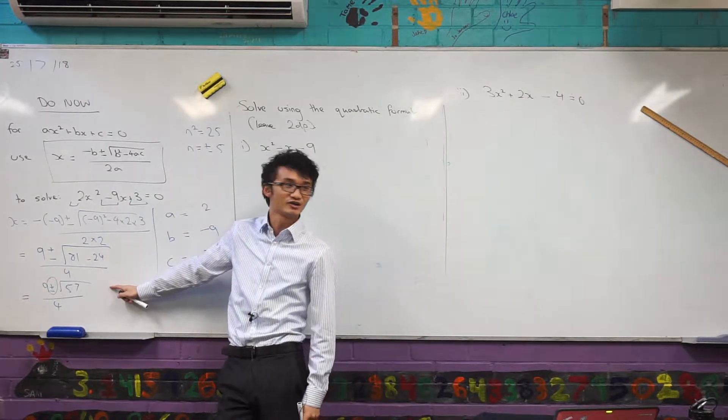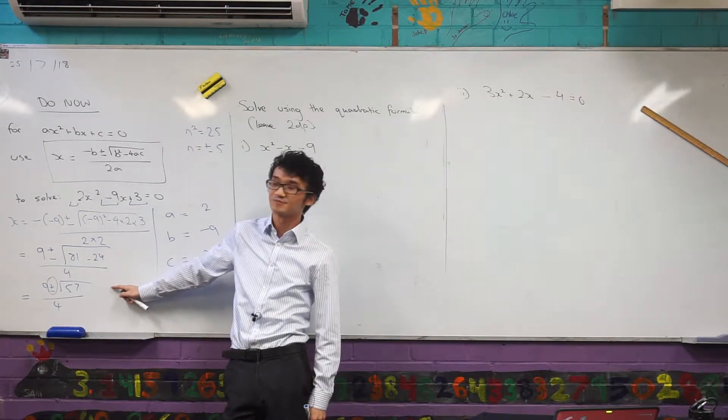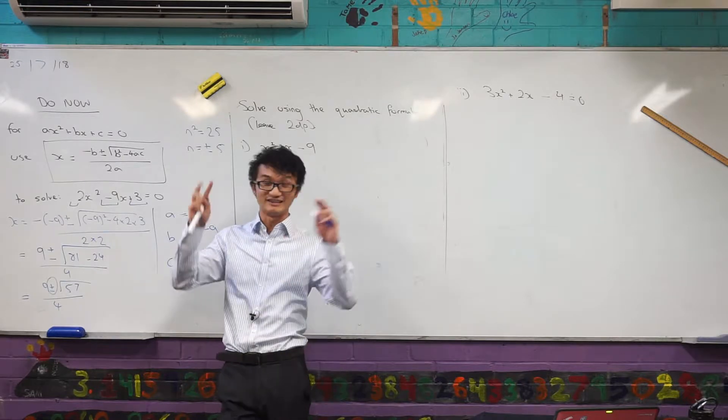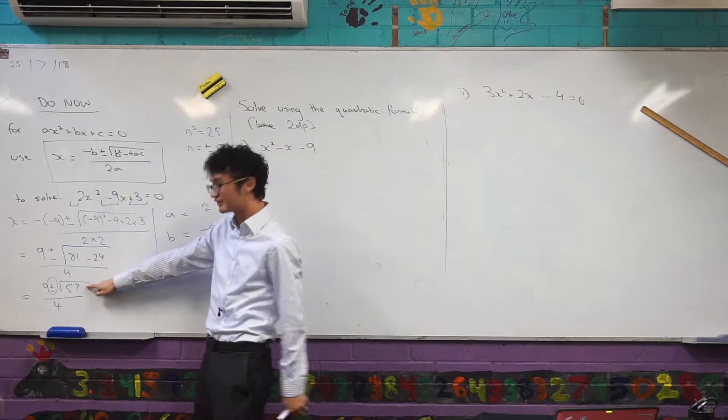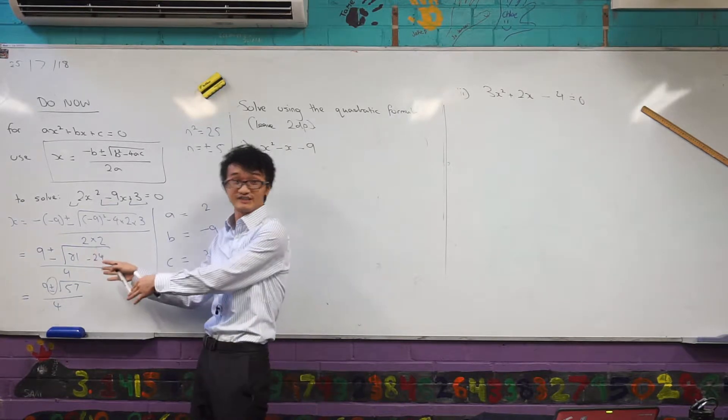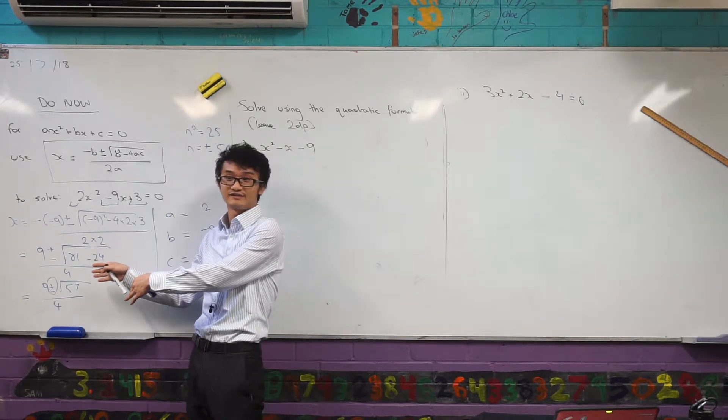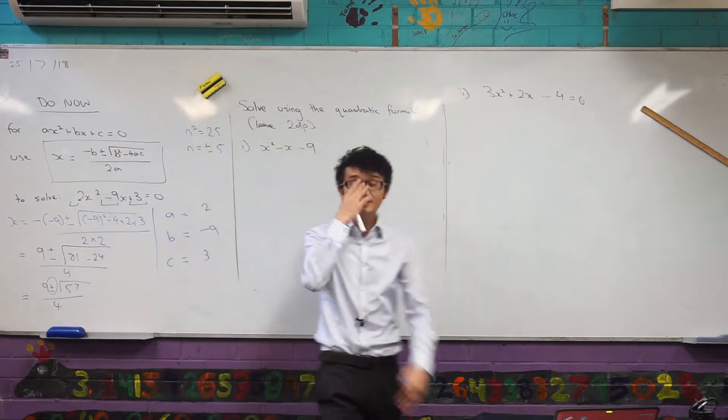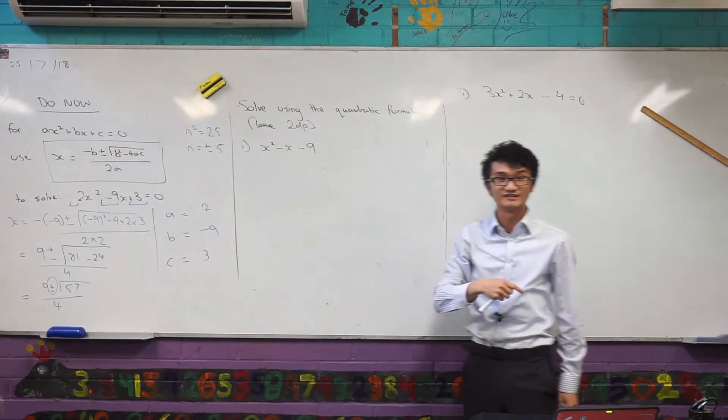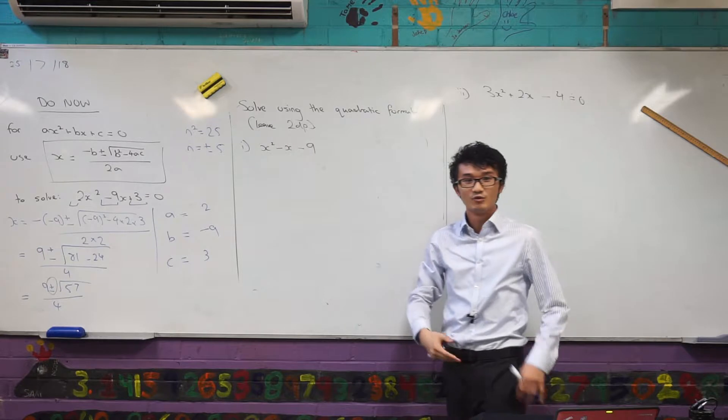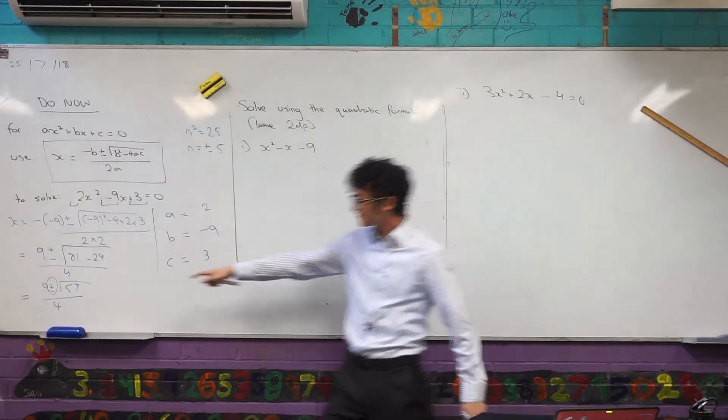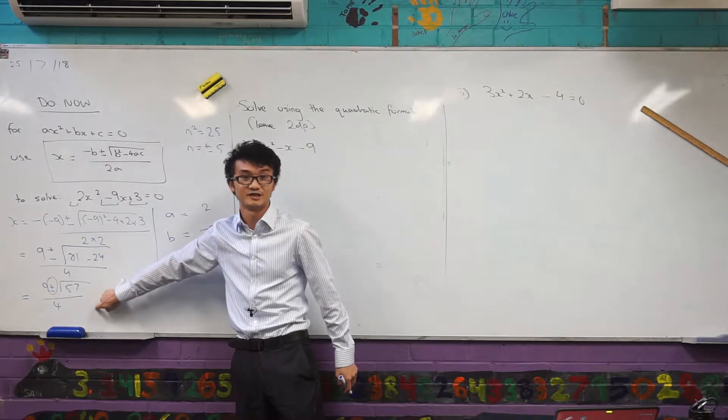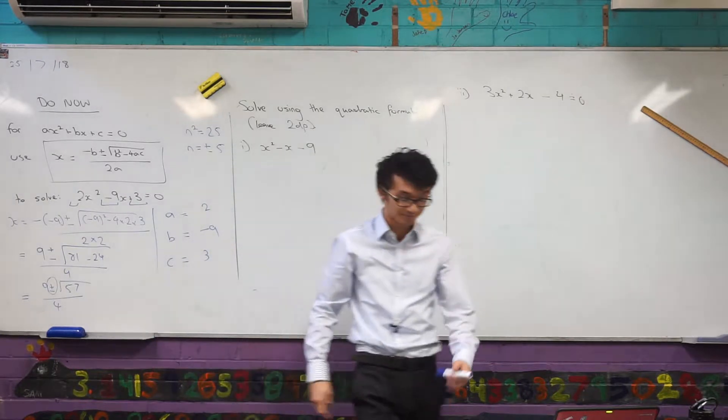What I've got here, I got cut off at the end of last lesson. We call it leaving it as exact, or sometimes you can hear it called surd form because you've got that square root there. We're just leaving it like that. But sometimes they'll ask you to leave as two decimal places.